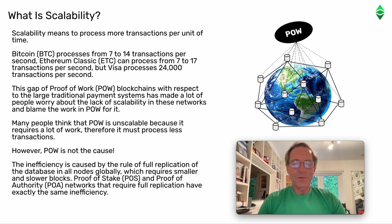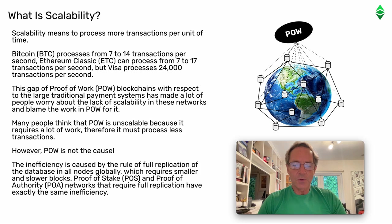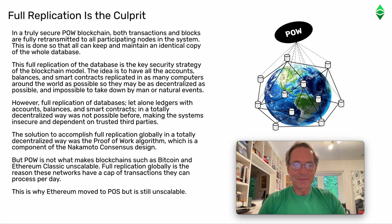However, Proof-of-Work is not the cause. The inefficiency is caused by the rule of full replication of the database in all nodes globally, which requires smaller and slower blocks. Proof-of-Stake POS and Proof-of-Authority PoA networks that require full replication have exactly the same inefficiency. Full replication is the culprit.